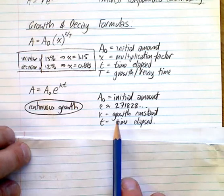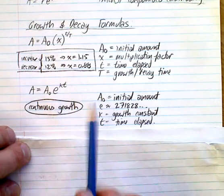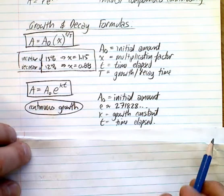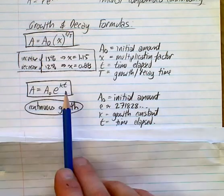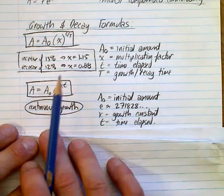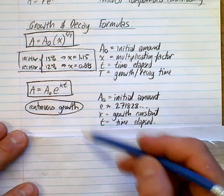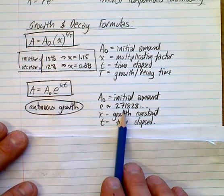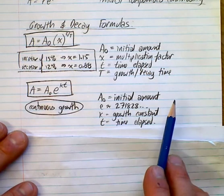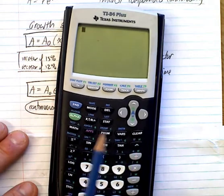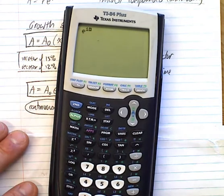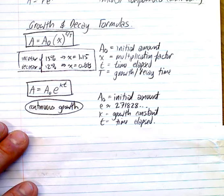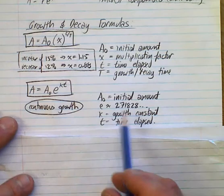T is the time elapsed, and capital T is the growth time or decay time. So, if it's every year, your big T is 1. If it's every 20 years, your big T is 20. If it's every three days, then your T is three days. Down here, you're going to be doing the same question using different formulas. But the difference is, in how we solve, the answer will be slightly different, but both should be acceptable. This one is likely going to be more accurate, depending on the situation.